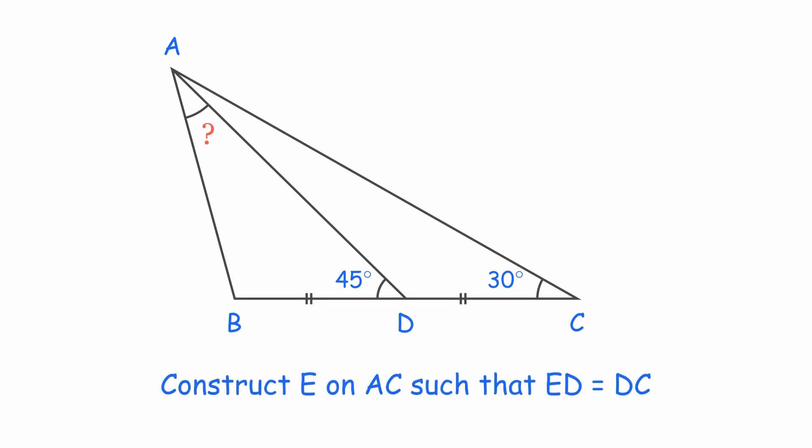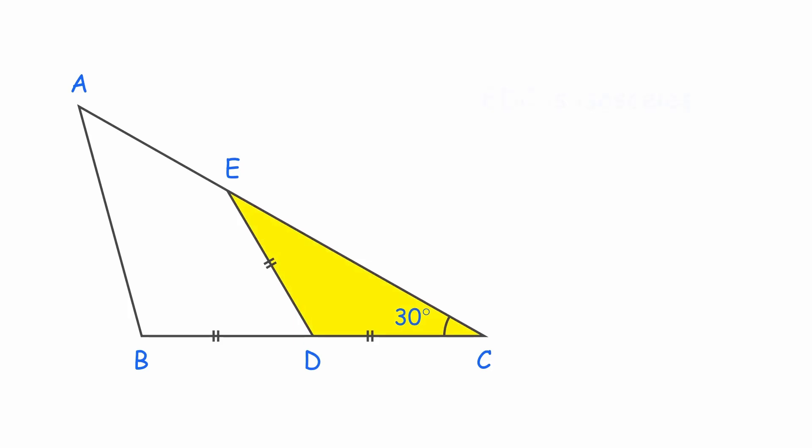So, let's draw a line ED with point E on side AC, such that ED equals CD. Now, look at triangle EDC. It's isosceles, so the base angles are equal.